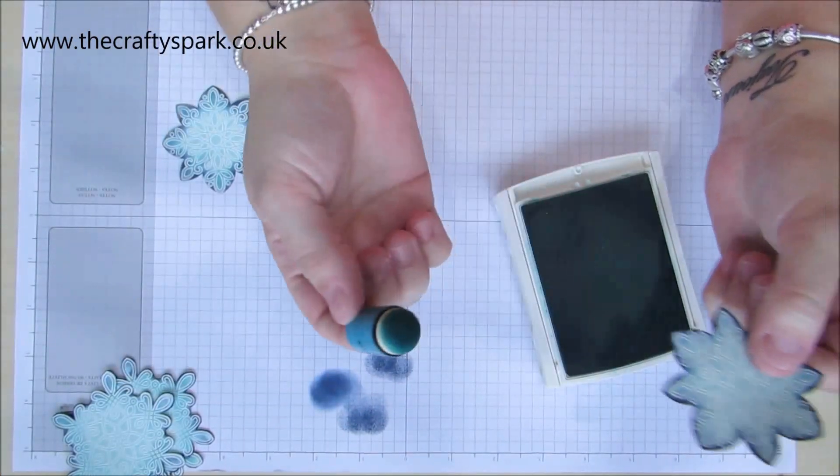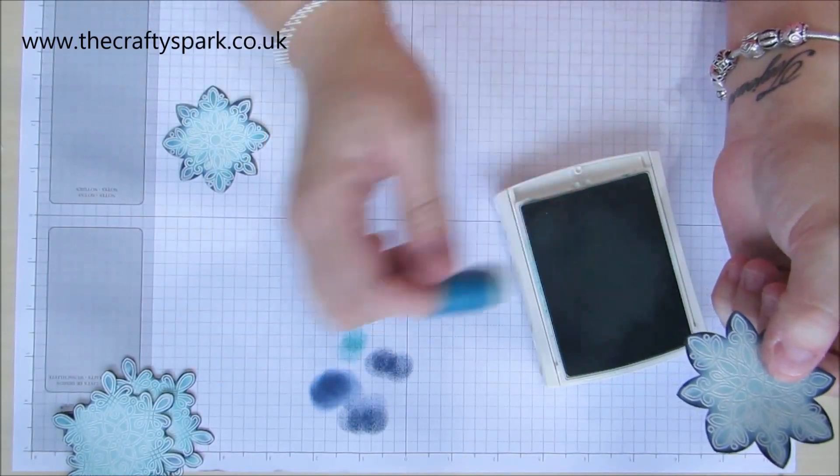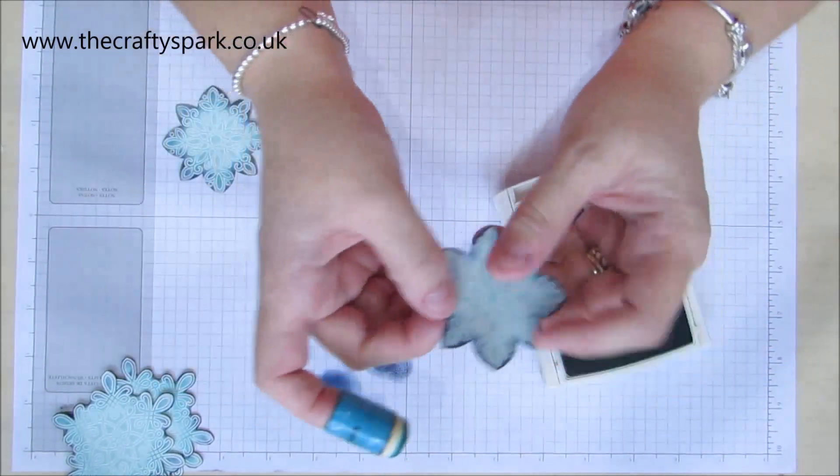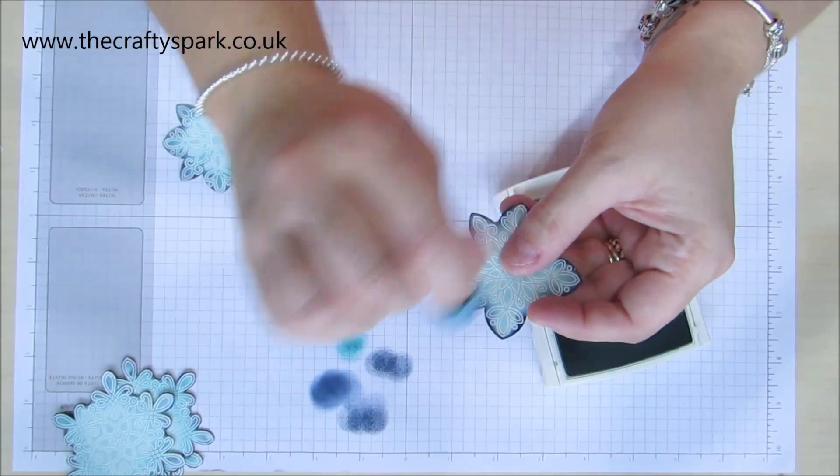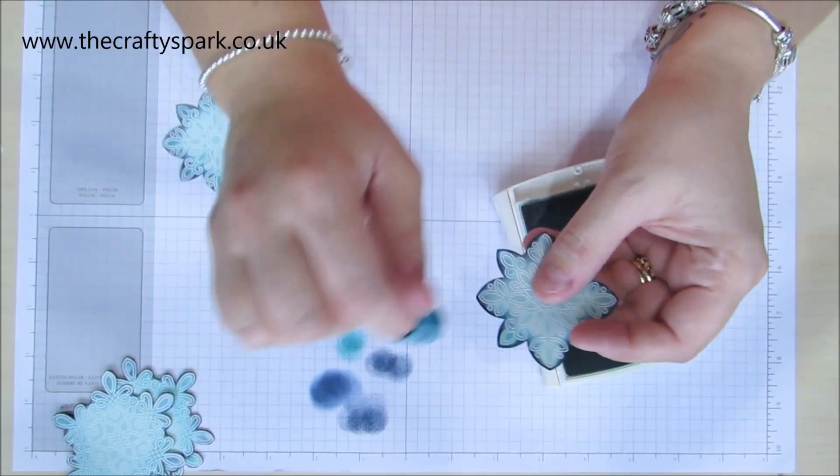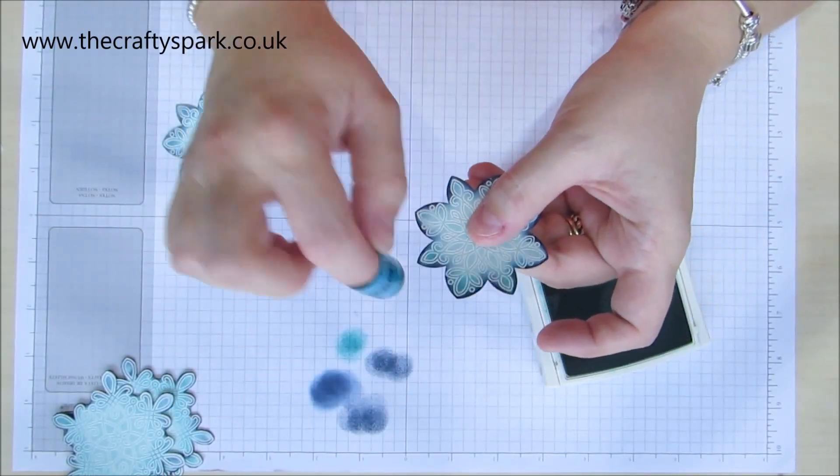So using some bermuda bay, just make sure I haven't got too much on that. But this time rather than going around the edges, I'm actually going to be going across the top. You see it's starting to change color, very slightly, and it just blends it in a bit nicer.